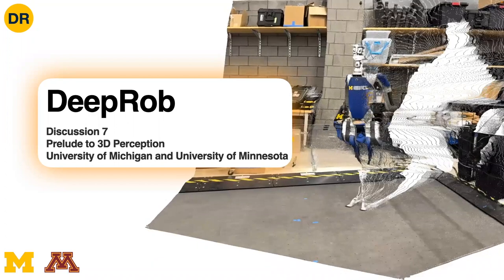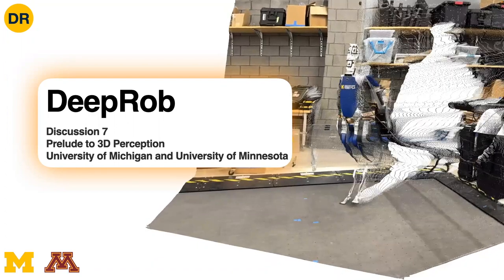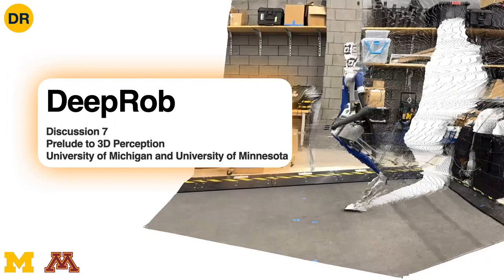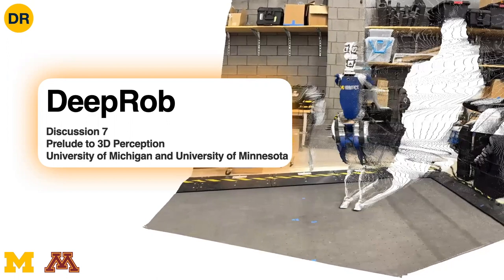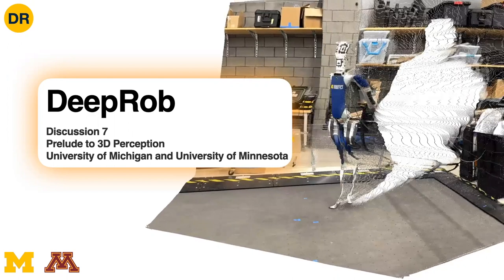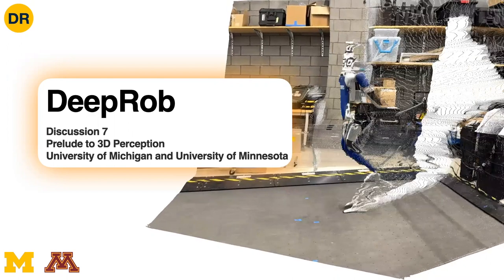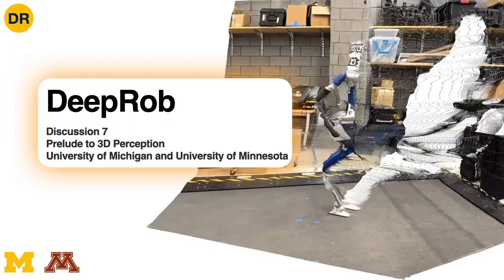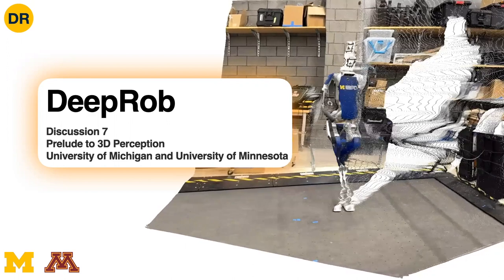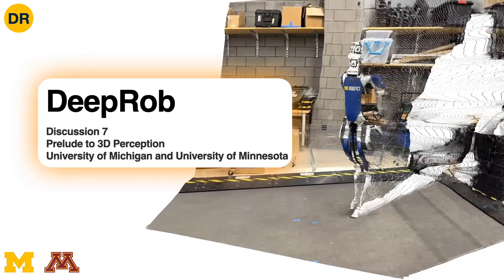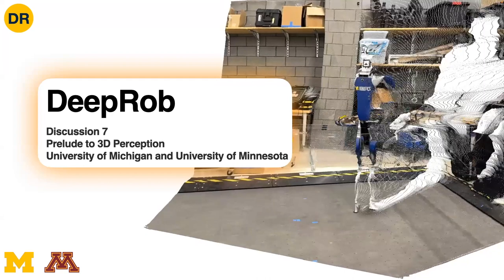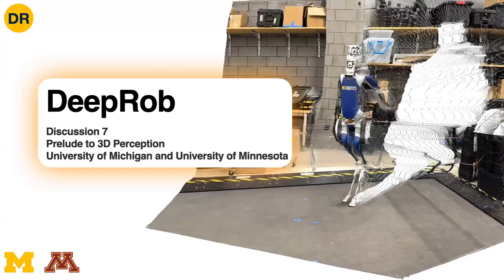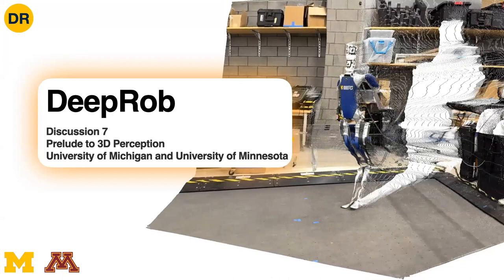Hello everybody. Welcome back to DeepRob for discussion seven. We're now pretty much just about halfway through the course, which is pretty amazing how fast these semesters go by. In today's discussion, this is going to be our first sort of prelude to these exciting topics that we're going to start talking about in the seminar-style lectures. Today's prelude is about 3D perception. Our robots operate in the 3D world.